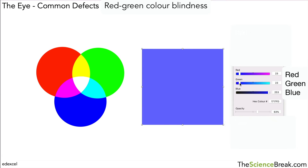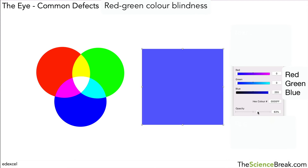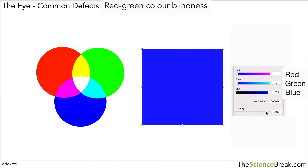Now we could take the red and the green off completely and what you'll notice is you can only ever see different shades of blue. So everything will look different shades of blue if a person has red-green colour blindness.